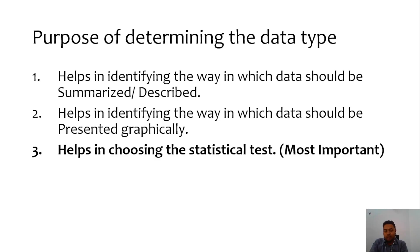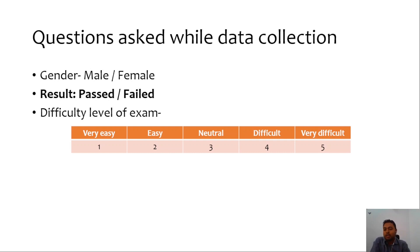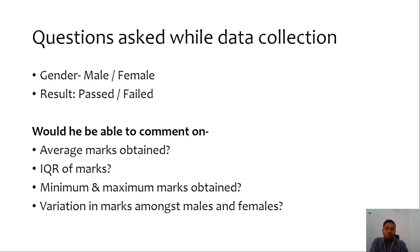When the postgraduate was collecting data, the questions asked were about gender (male or female), marks obtained in the last exam, and the difficulty level of the exam. Now suppose instead of marks obtained he had collected data only in terms of results — whether passed or failed. Would he then be able to comment on the average marks obtained by boys or girls, the interquartile range, the minimum and maximum marks, or the variation in marks among males and females? Certainly not.